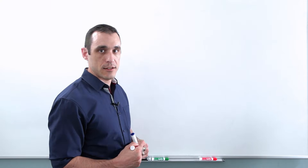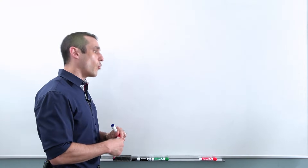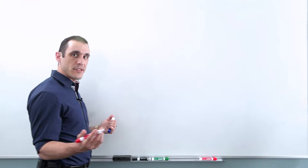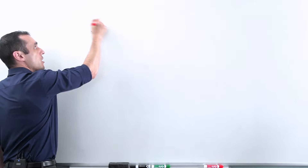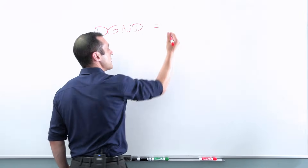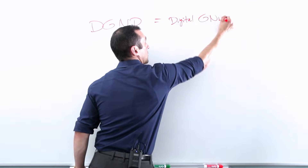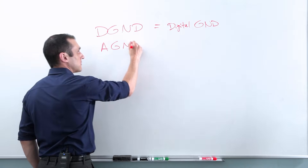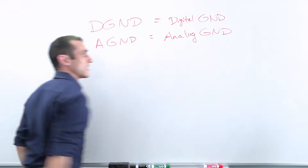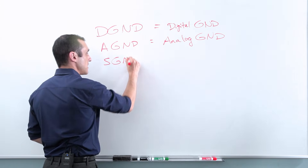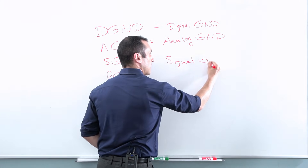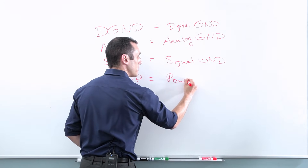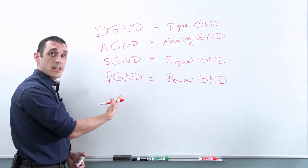When you start looking at component data sheets for components like digital-to-analog converters or analog-to-digital converters, or maybe some other components that require an analog input, you will usually see some different ground net names or pin names on those pinouts. Some common ground names are DGND, which normally stands for digital ground, and AGND, which normally stands for analog ground. Sometimes you'll even see SGND and PGND — SGND normally stands for signal ground, and PGND usually stands for power ground if you're dealing with a non-isolated switching regulator that has a feedback line.